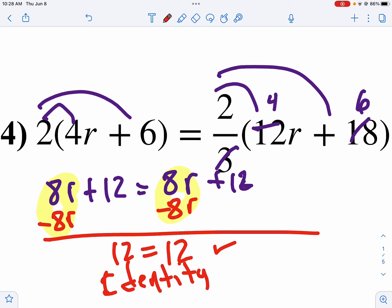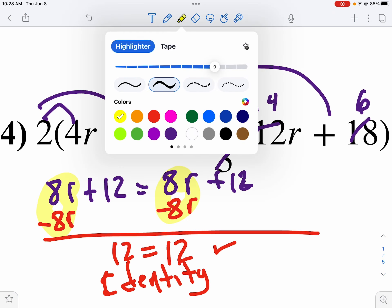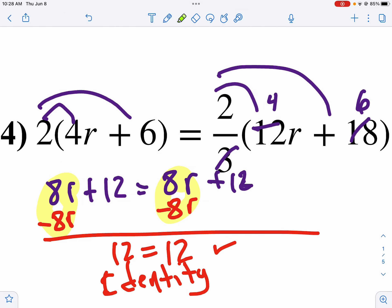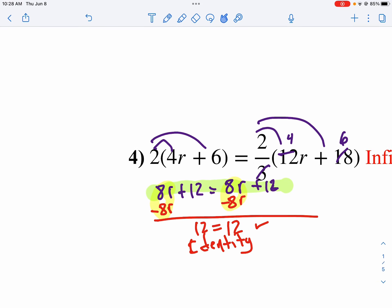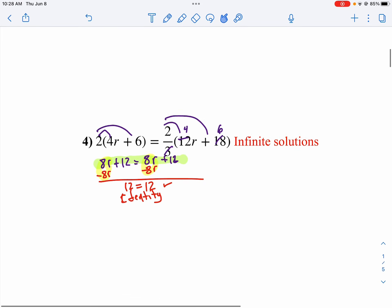Identity means it's exactly the same. There's infinite solutions. Notice you might have noticed way back in step 2, they were the same. You could have said, hey, there's infinite solutions. There's an identity right there, because they're the same on both sides, so you didn't actually have to do too much on that one.